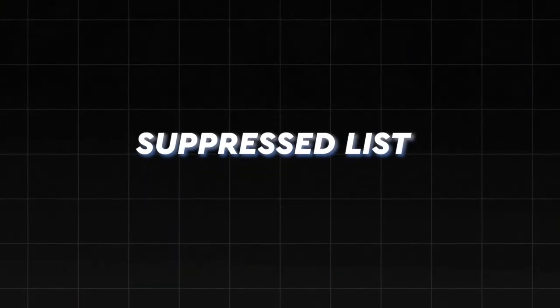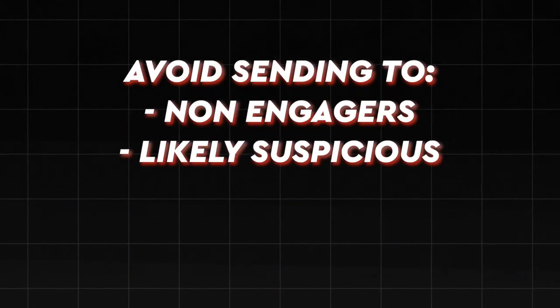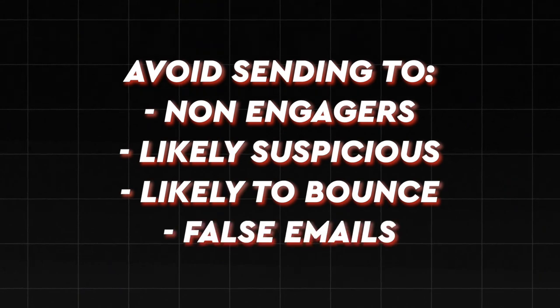Lastly is the suppress list, and this one is very underestimated. A lot of people talk about segmenting based on engagement or buying behavior, which is fantastic, but many brands aren't excluding people that are simply unqualified, didn't engage, or are likely to harm deliverability. The goal of the suppressed category is to prevent sending to the wrong people that can hurt your deliverability, your domain reputation, and might lead your emails to going to spam. We want to avoid sending to people that just never engage, are suspicious, likely to bounce, or give you false emails for a coupon code.